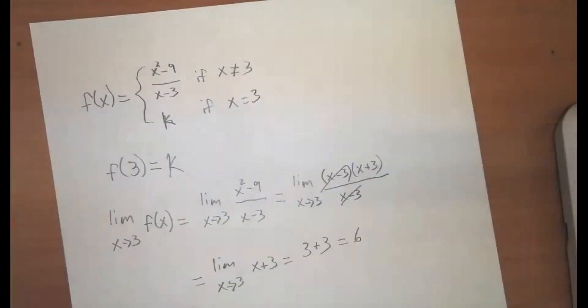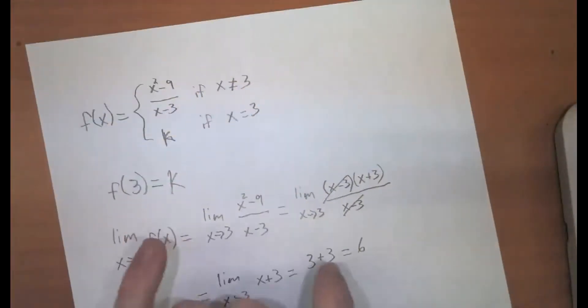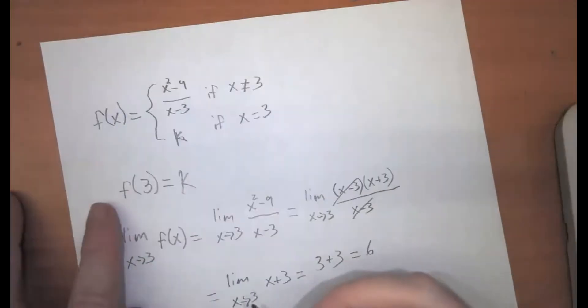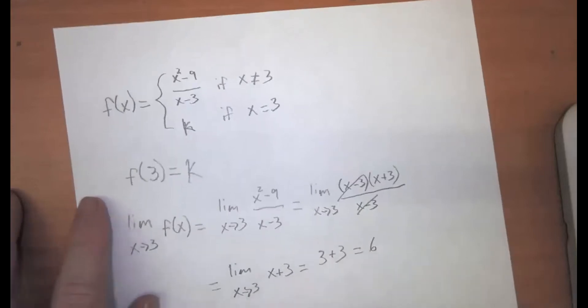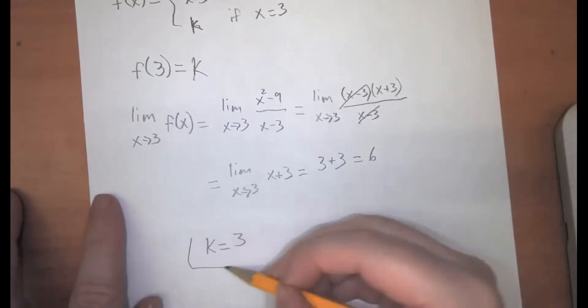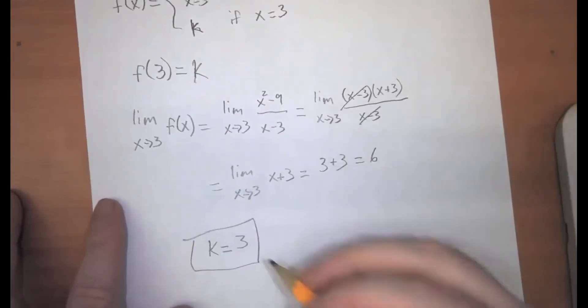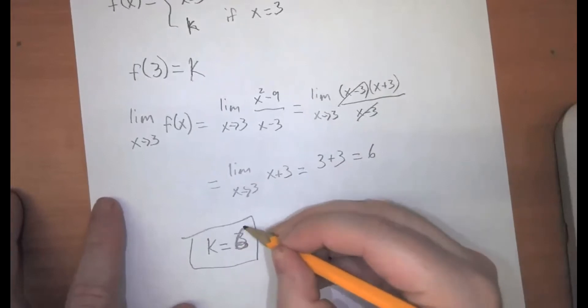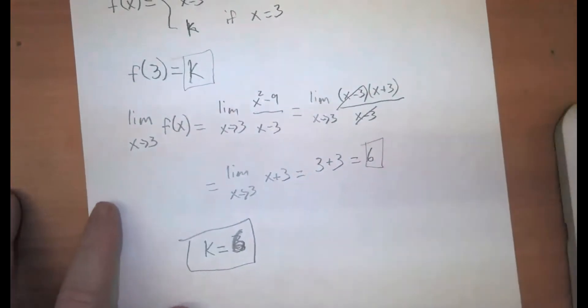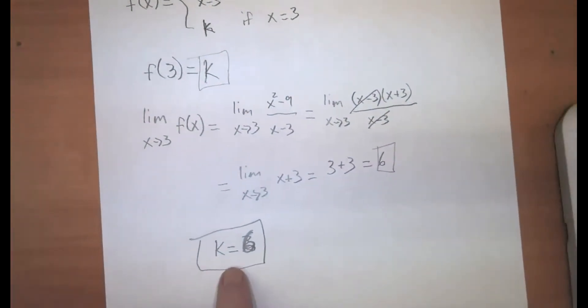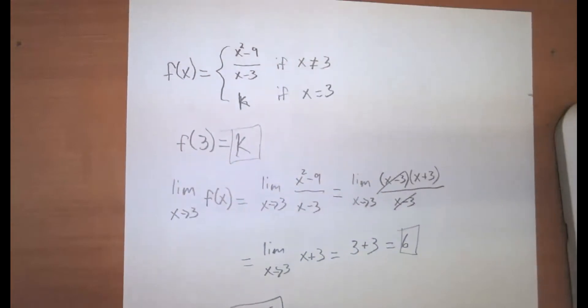And those values have to be equal. So in order for the function to be defined here and to be continuous at 3, this is just saying we need to set k equal to 3. I'm sorry, k is equal to 6. So this k has got to be equal to the limit. All right, so k equals 6 is the value of the function at 3 in order for the function to be continuous at 3.